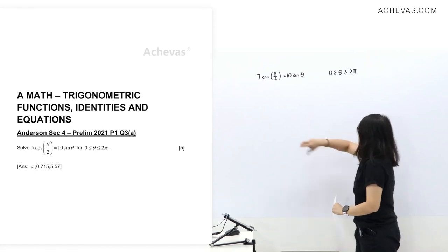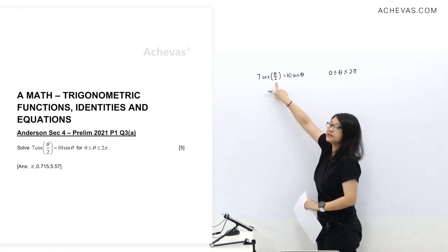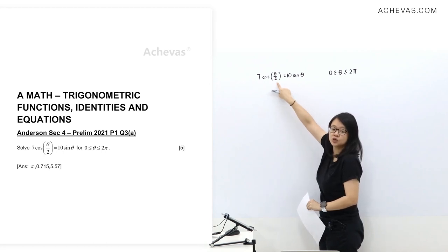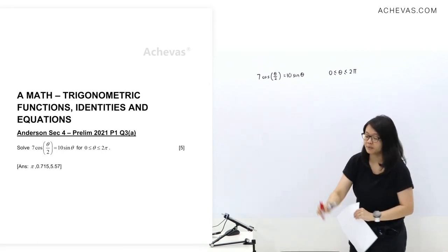Before we start, let's observe this one. Look at the angle here. They're different. This is theta, this is theta over 2. So we'll start by using a double angle formula.